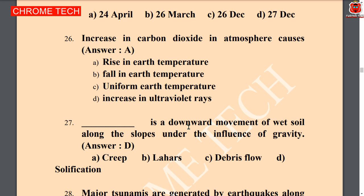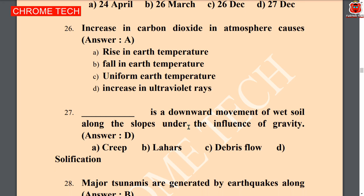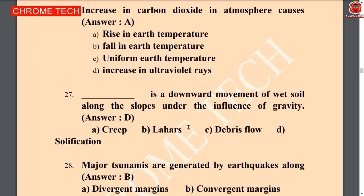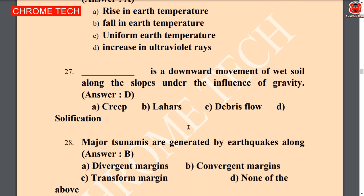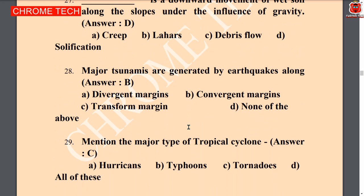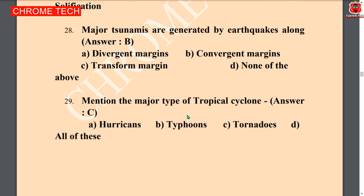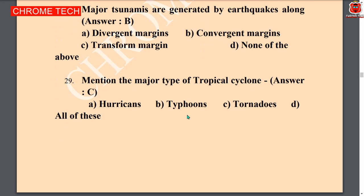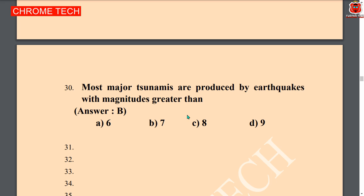Increase in carbon dioxide in the atmosphere causes — rise in earth temperature. Option A is the correct answer. Next question: dash is a downward movement of wet soil along a slope under the influence of gravity — option D, solifluction, is the correct answer. Major tsunamis are generated by earthquakes along — convergent margins. Option B, convergent margin, is the correct answer. Major type of tropical cyclone — option C, tornadoes, is the correct answer.